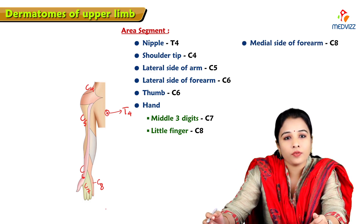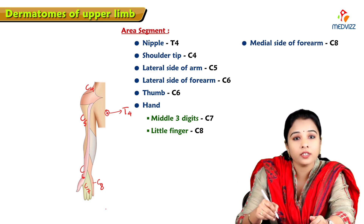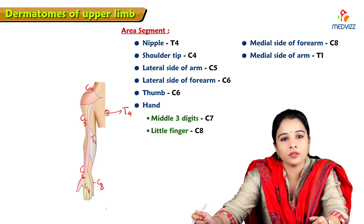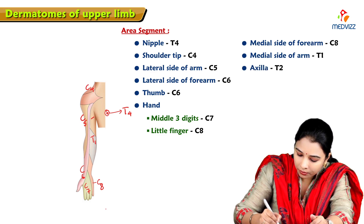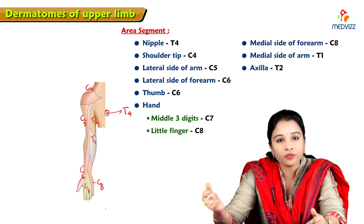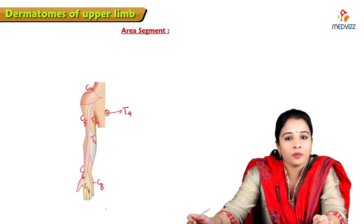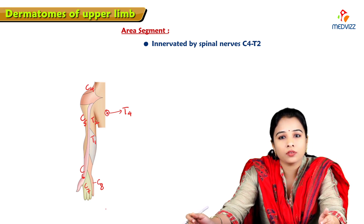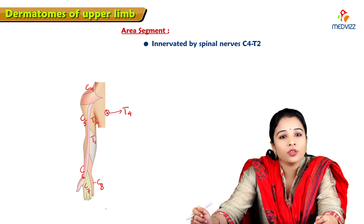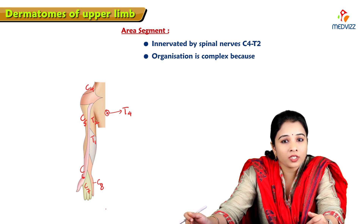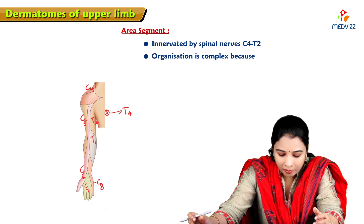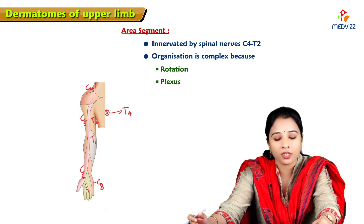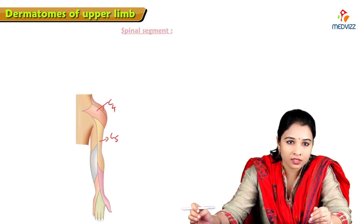The medial side of the forearm is C8. The medial side of the arm — and partly the forearm — is T1. The axillary region is T2. So the dermatomes of the upper limb are innervated by spinal nerves approximately from C4 to T2, all of which are also involved in the brachial plexus. The organization of dermatomes is complex because of the rotation of the upper limb bud during embryonic development and because of the plexus formation.